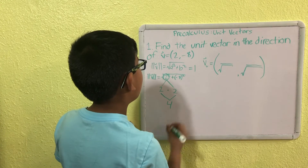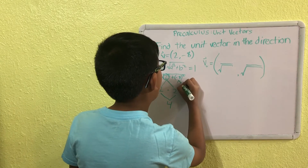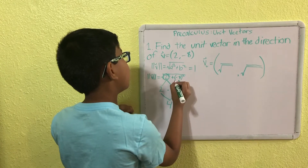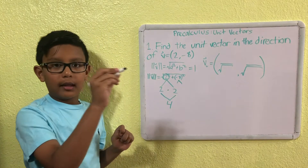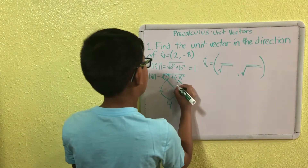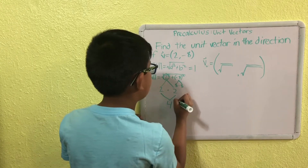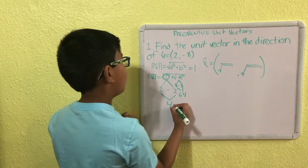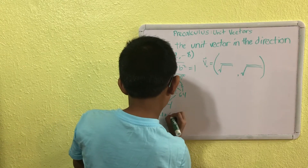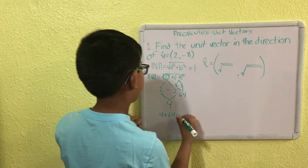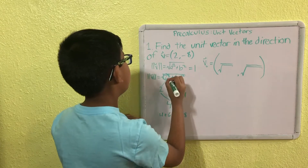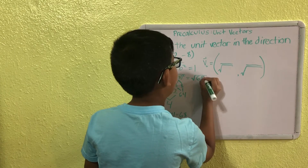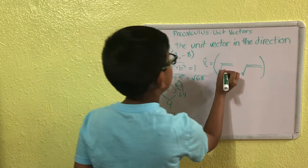Squaring a negative number — the negatives cancel each other out, so you're left with a positive number. In this case we have 8 times 8, which is 64. So we have 4 plus 64, which equals 68. We put that under our square root symbol, giving us square root of 68. Now we know the denominator is going to be the square root of 68.